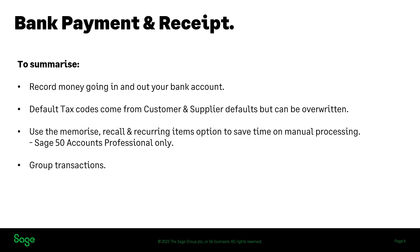A question came in asking what transactions get grouped. Grouping applies to your bank payments or bank receipts. If transactions share the same date and reference, they'll be consolidated into one entry — and that's what you'd see in your bank activity and bank reconciliation.